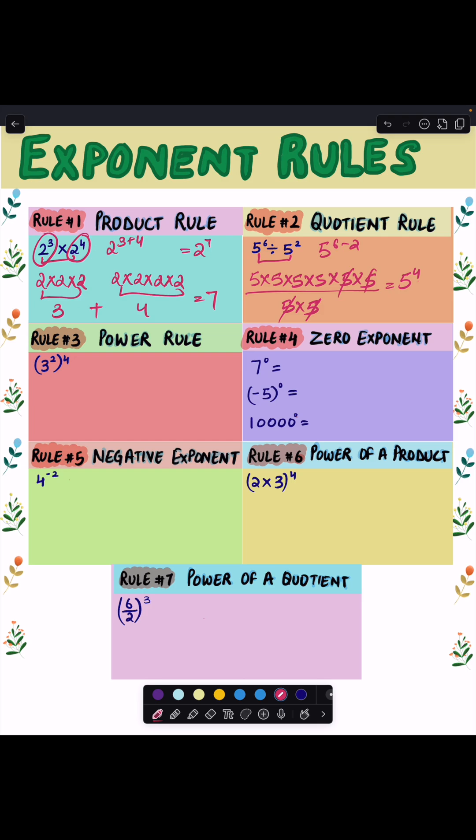the answer 5 raised to power 4. Next rule is the power rule, which says when you raise a power to another power, multiply the exponents. It means we're taking 3 raised to power 2 as our base and multiplying it four times.